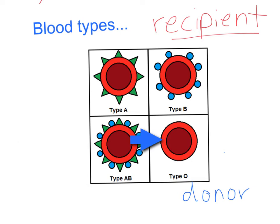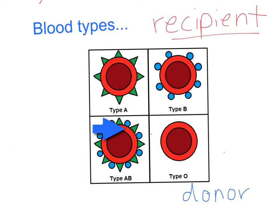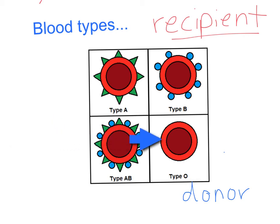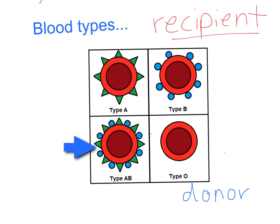Someone who is type O blood is referred to as a universal donor, meaning they are able to donate blood to someone with type A, type B, type AB, or type O. So if you happen to be an individual who has type O blood, the American Red Cross loves to contact you to donate blood. Because if someone is in the hospital and needs a blood transfusion, nine times out of ten doctors are going to grab type O blood, since they're not always going to know the blood type of the patient — but everyone can receive type O blood.